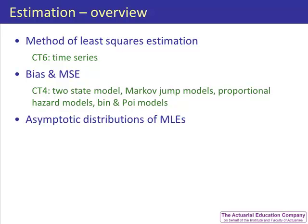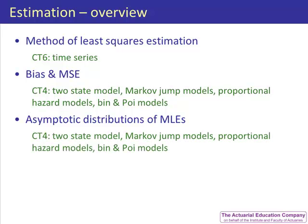Finally, the asymptotic distribution of maximum likelihood estimators gives the distribution of an estimator for large samples. We can use this to obtain confidence intervals for an estimate. Again in subject CT4, we look at these properties of estimators in two-state Markov models and other Markov jump models, and also in proportional hazard models and the binomial and Poisson models.